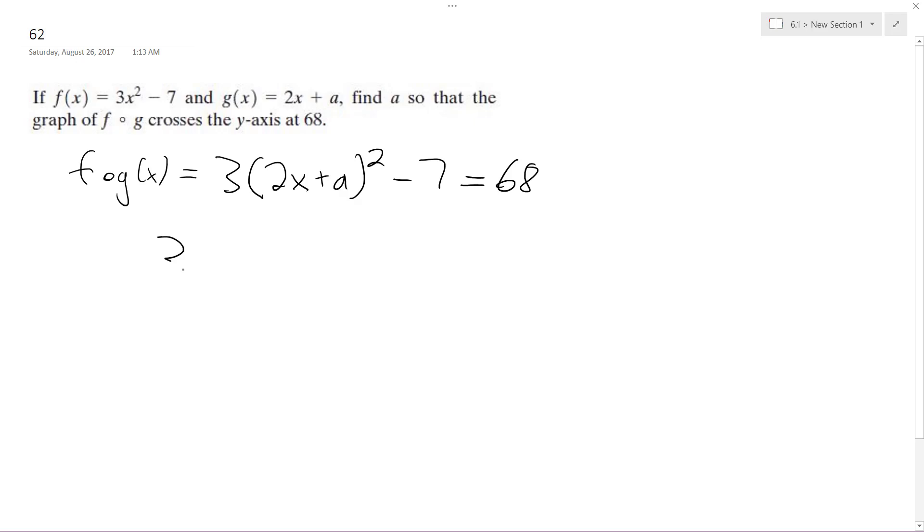So three times quantity, we can plug in zero. So we get a squared minus seven equals 68.